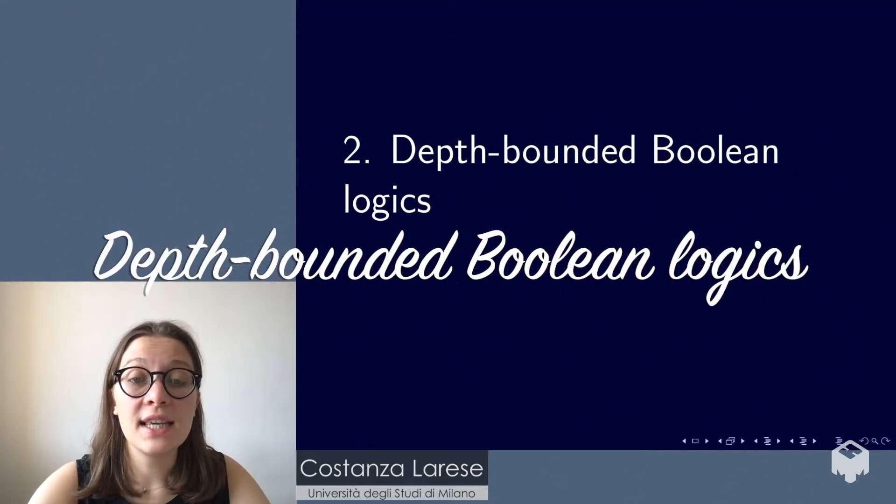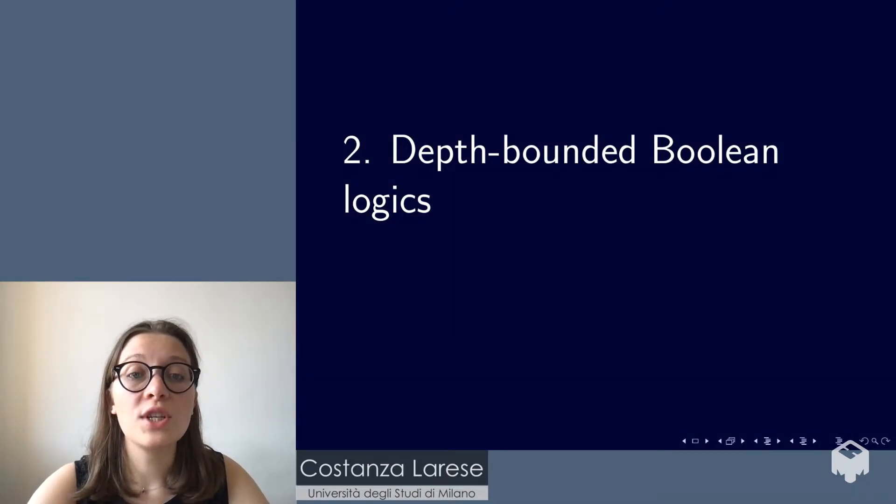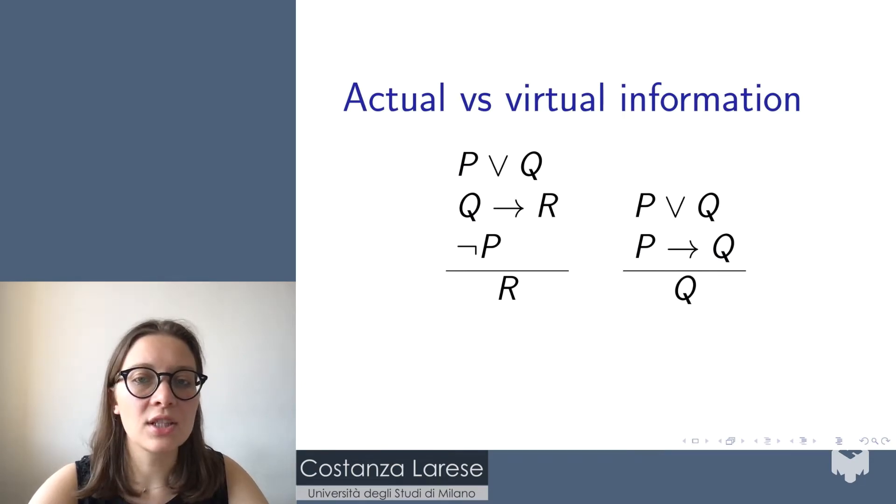So, the point is, if first-order logic is undecidable and the decision problem for Boolean logic is most probably intractable, how is it possible to maintain that classical logic is uninformative, trivial, analytic? Well, this observation is at the origin of the approach of depth-bounded Boolean logics, which has been put forward by D'Agostino and co-authors in a series of papers published in the last 12 years or so. So, this approach finds an essential difference, which is not captured by classical logic, between these two kinds of inferences. On the one hand, the inference from the premise P or Q, if Q then R, and not P, to the conclusion R. On the other hand, the inference from the premises P or Q, and if P then Q to the conclusion Q.